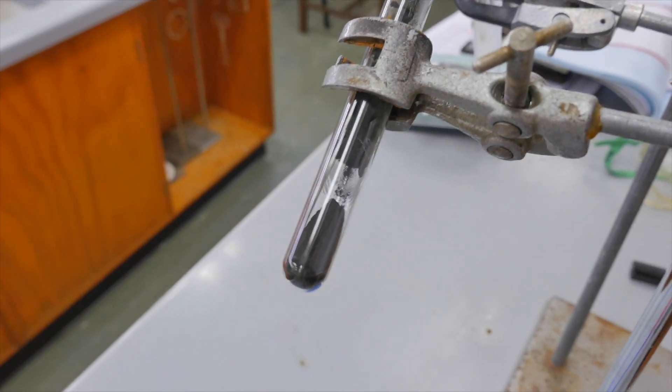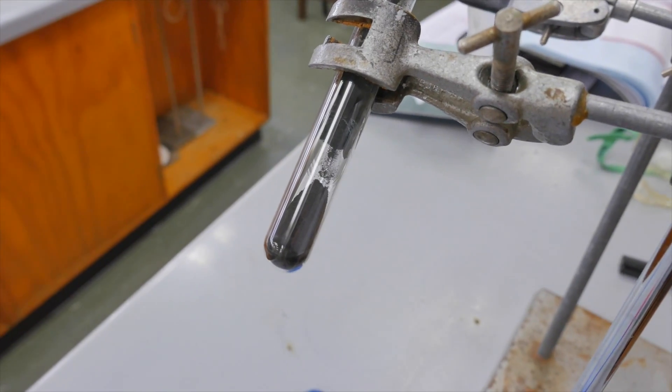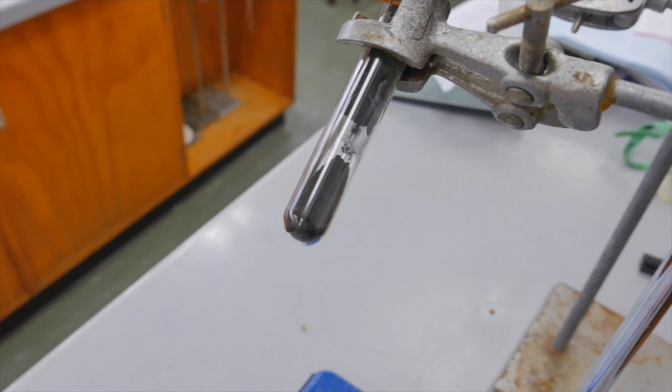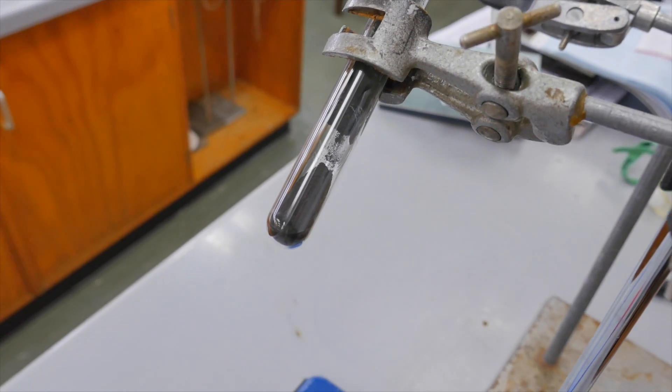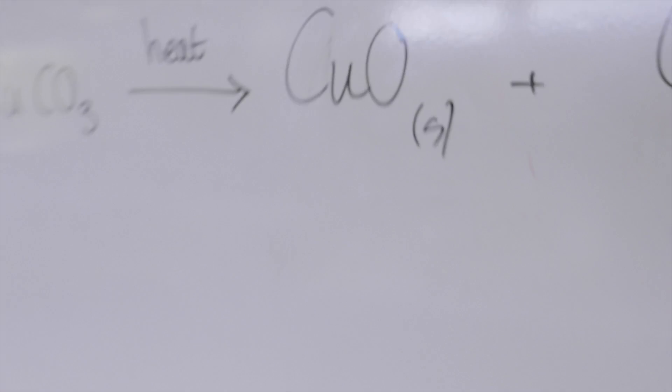So it hasn't completely decomposed down to its component elements. So it must be some sort of compound. And usually when you have metals, they're going to be some sort of oxide. So hence, copper oxide.